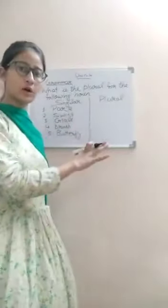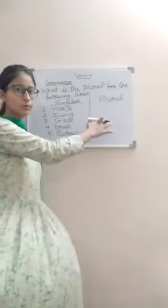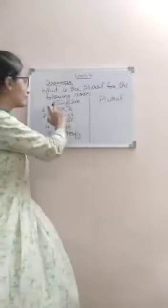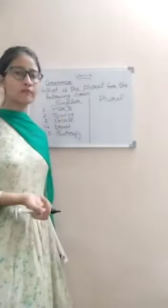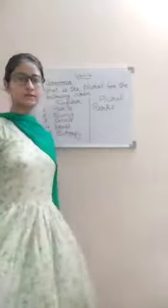Now students, take out your notebook. I will write some words and you have to write them down. What is the plural for the following nouns? You have to divide it into two parts: singular and plural. The first word is park — the plural of park is parks. We add S to it.